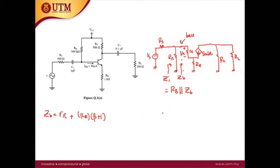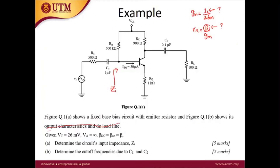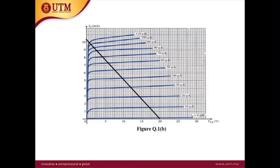Before moving to the calculation, we need to find Rpi. As mentioned, Rpi is not given directly, so we first calculate Gm, then beta. Gm equals IC over 26 mV. The IC is the Q-point value, found from the intersection of the output characteristic curve and the DC load line.